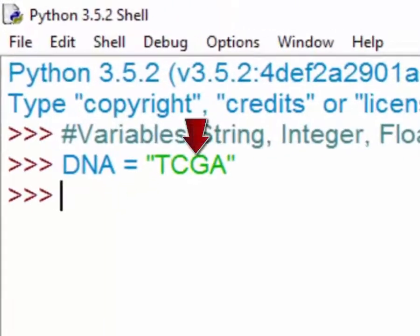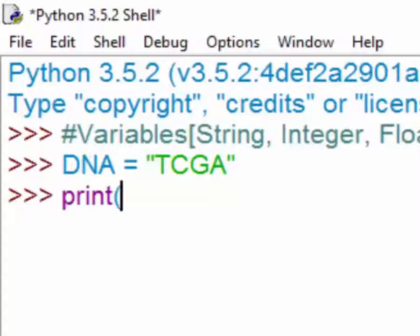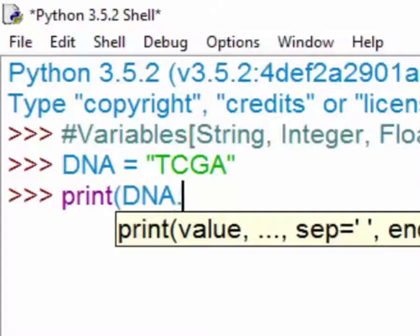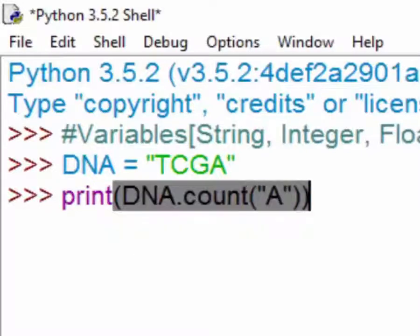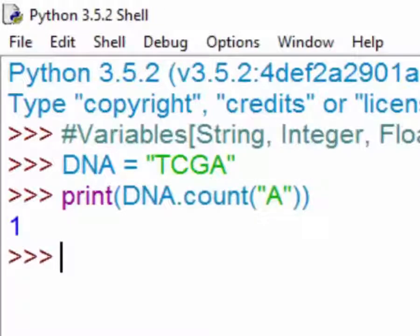An integer variable can hold data in the form of whole numbers. If you print DNA.count("A"), this tells the software to print the number of adenines in the DNA variable. It shows one because there is only one adenine.